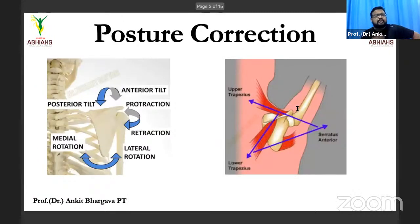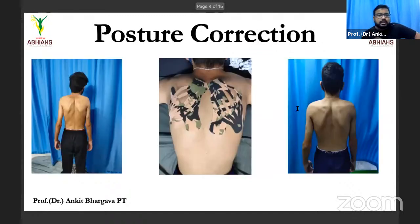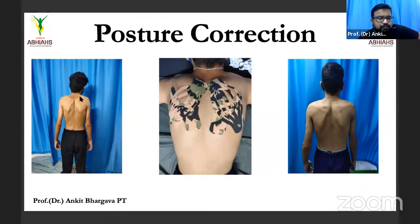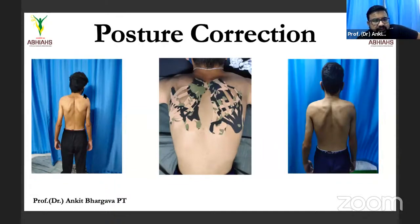Due to time constraints, I'll quickly move to how we do taping with a case study. This is a 17-year-old male. You can see his posture on day one — he was unable to flex or bend his back, had very tight hamstrings, and the scapula was in an abnormal position with tightness present. After only five sessions of manual therapy and taping — just three things done including bone adjustments — you can see the change in position.